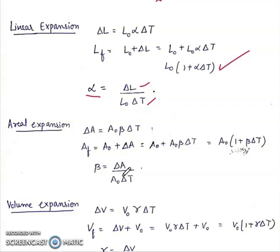Beta is change in area per unit initial area per unit rise in temperature. Final area will be initial area plus change in area.